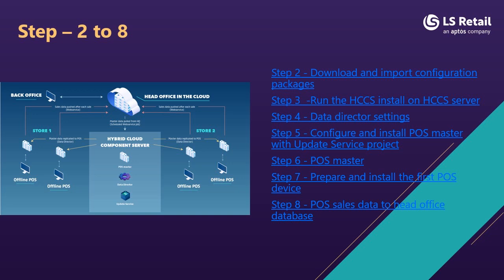Subsequently, you will run an action job to pull down any changes from head office in SaaS. In step seven, when you are ready with the POS master, you will use the update service to create an installer for the offline POS — cloning the POS master and generating a small executable file which you run on the offline POS or offline POS server. In step eight, when you have installed the offline POS, the only thing you need to do is subscribe to POS web services. After each transaction on the offline POS, the transactional data will be sent to head office using web services. You can also use web services for member management lookups, customer order data, and inventory lookups.